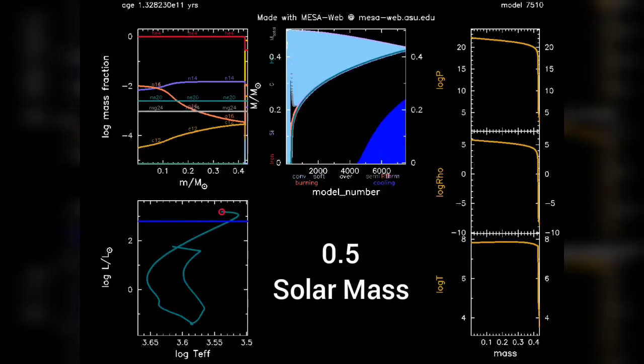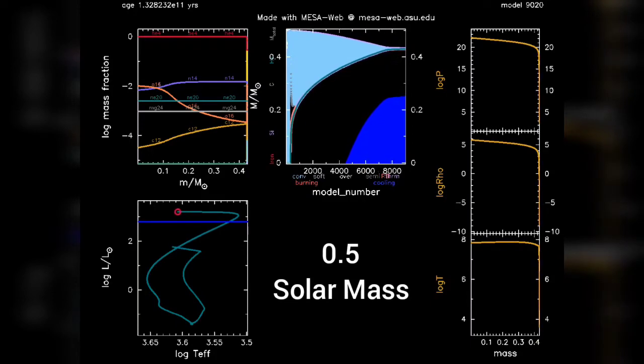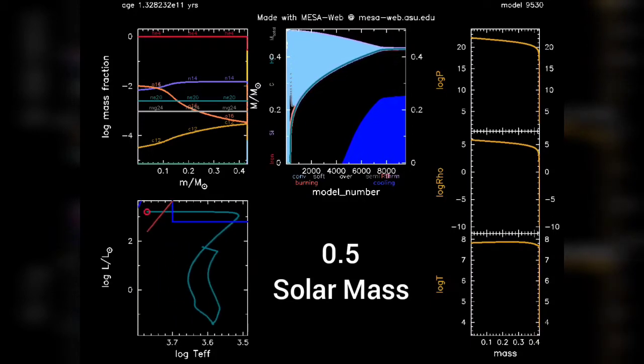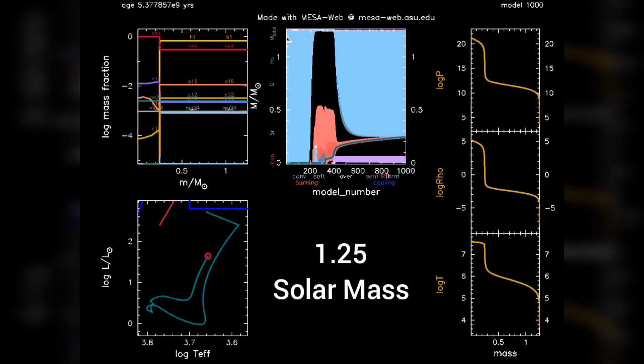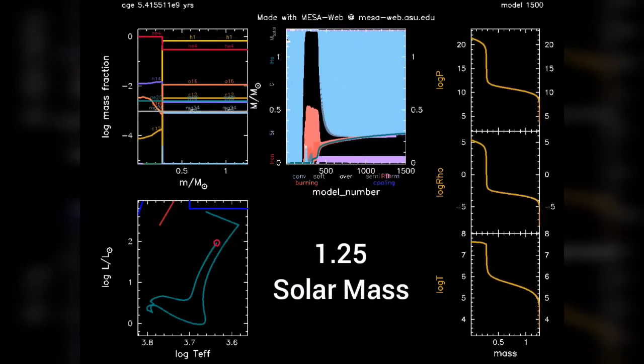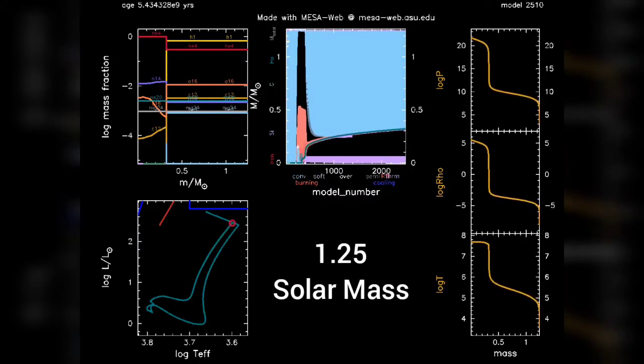The first graph talks about the abundances. On the x-axis we have the Lagrangian coordinate mass, which acts like a signature for the radial distance from center. So basically the x-axis goes from the center of the star to the surface of the star. On the y-axis we have mass fractions, that is abundances of different nuclear species.